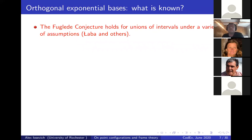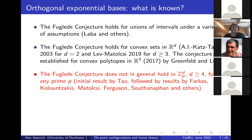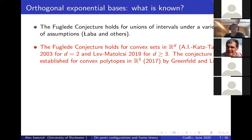The Fuglede conjecture holds for unions of intervals under a variety of assumptions — a line of investigation pursued by Isabella Laba and others. It also holds for convex sets in R^d: proved in the two-dimensional case by Nets, Katz, Terry Tao, and myself, and proved in all dimensions by Nir Lev and Matomäki just last year in a really beautiful paper. It was previously established for convex polygons in R^3 by Rahel Grinfeld and Nir Lev just a couple of years before that.